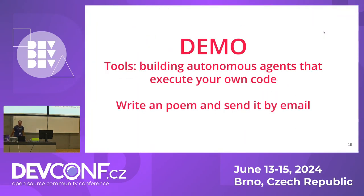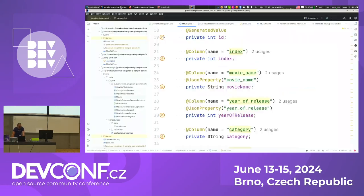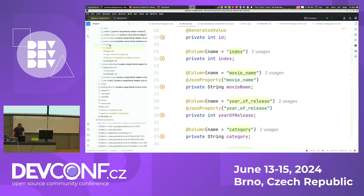Now the last demo — building autonomous agents using tools, which lets the LLM execute your own code. In this example I'll instruct the LLM to write a poem about Quarkus and send it by email. Writing a poem is easy for an LLM, but sending email is not something LLMs support out of the box. So I'll provide a tool — a piece of code that sends an email — and allow the LLM to execute it.